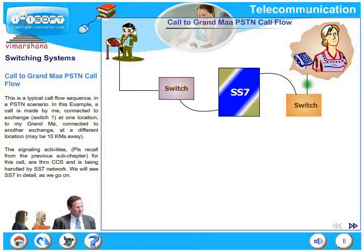The signaling activities — please recall from the previous subchapter — for this call are through CCS and are being handled by the SS7 network. We will see SS7 in detail as we go on.